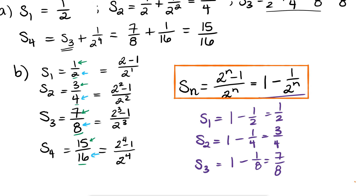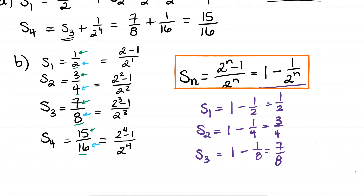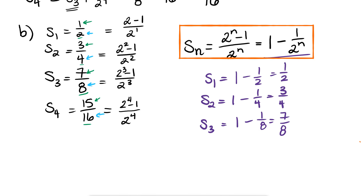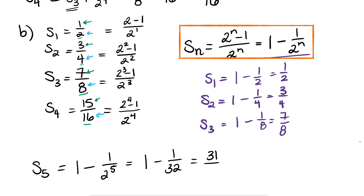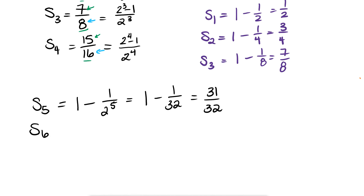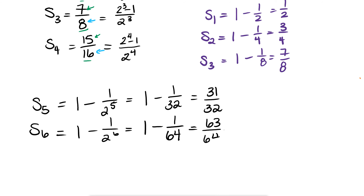Using that formula: S sub 5 equals 1 minus 1 over 2 to the fifth. Since 2 to the fifth is 32, that gives 1 minus 1/32, which is 31/32. And S sub 6 equals 1 minus 1 over 2 to the sixth. Since 2 to the sixth is 64, that gives 63/64.